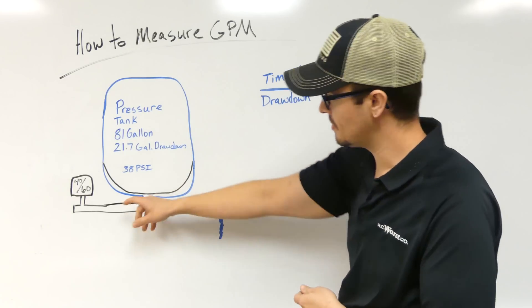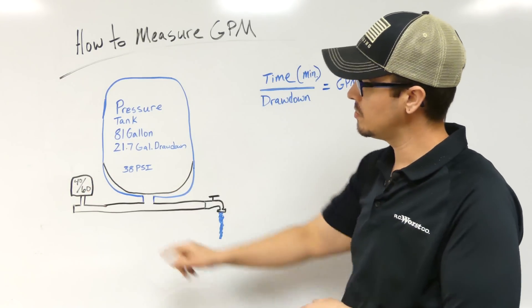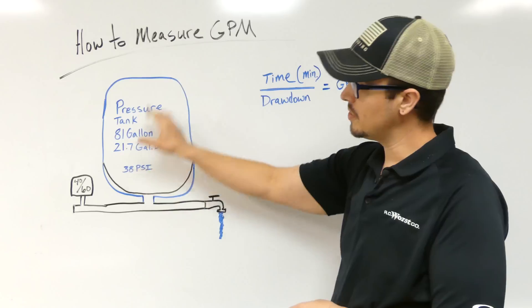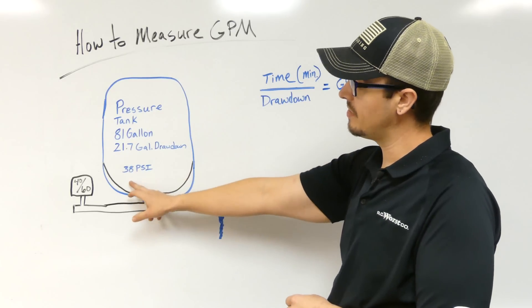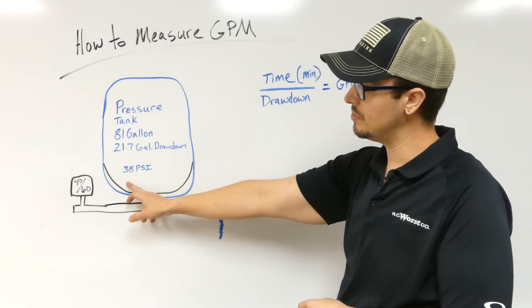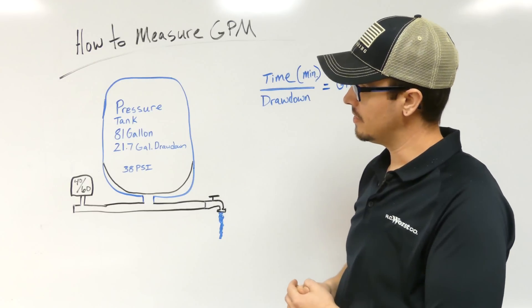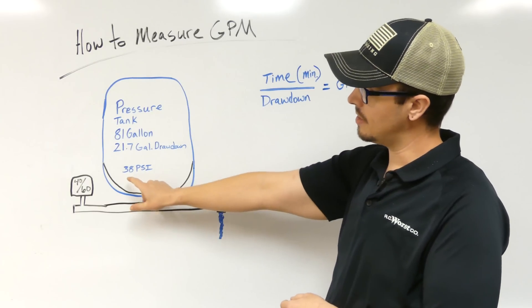It's a 40 to 60 setup, so we've got a 21.7 gallon drawdown. It's a good time when you're checking all this to go ahead and verify that your pressure tank is set to two to three pounds below your cut-in pressure on that pressure switch.